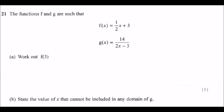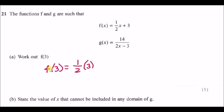Number 21: the functions f and g are defined with f(x) and g(x) as a fraction. For part a, work out f(3) — you literally just replace the x value in f with 3. So you get f(3) = half times 3 plus 3.